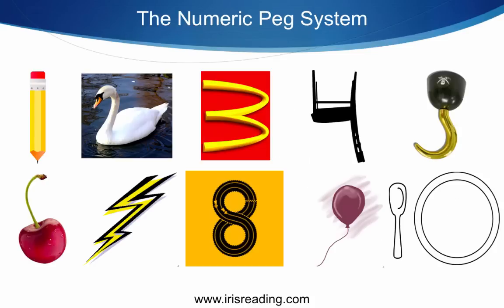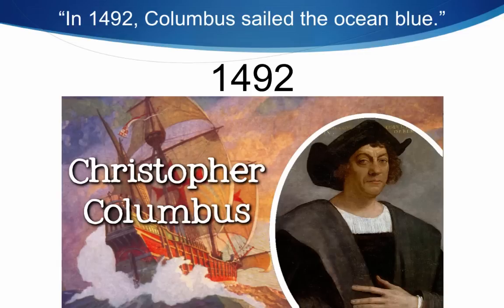So you need to have these memorized first to start using the numeric peg system. You can pause the video if you need to memorize them, but I'm just going to continue moving on. So how do we use these numbers if we're trying to remember something? If you have to remember the date 1492, some of us may have been taught that phrase 'in 1492 Columbus sailed the ocean blue.'